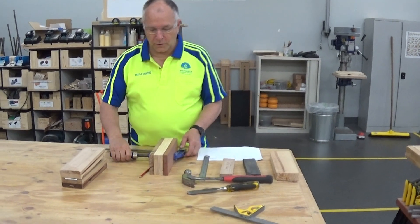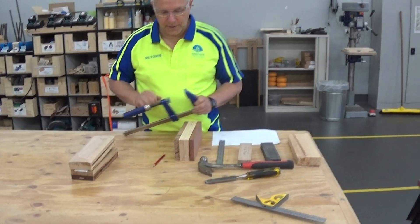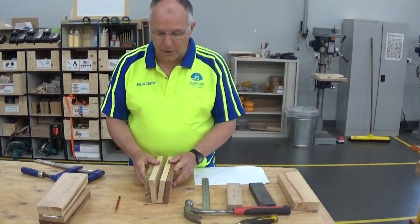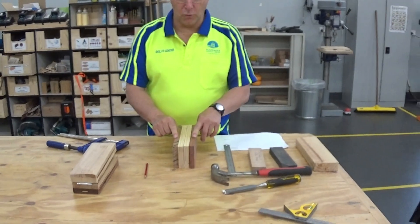Alright, so by now your glue should be dried from these together, remembering that the white ones, the lighter ones, are radiata pine, a pine tree which is a softwood, and the outsides are hardwoods.